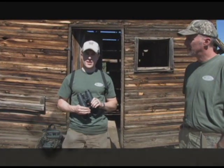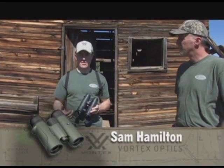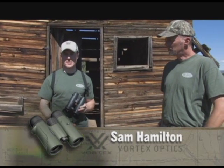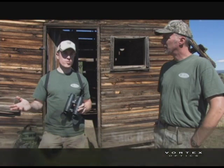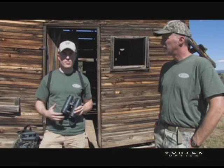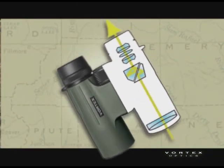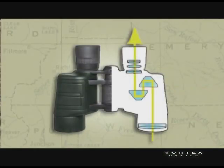Another thing that you'll see mentioned sometimes in binocular terminology is roof prism or poro prism. Those are the two most popular prism styles used in binoculars nowadays. What that means is it's the physical geometry of the prism inside the binocular that determines whether it's a roof or a poro prism.